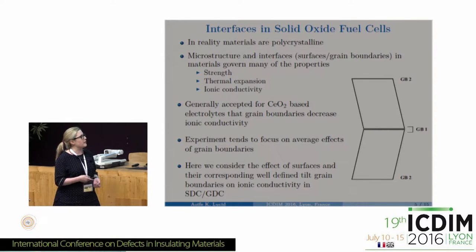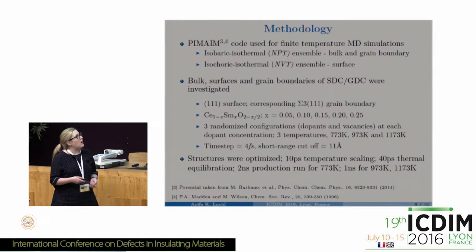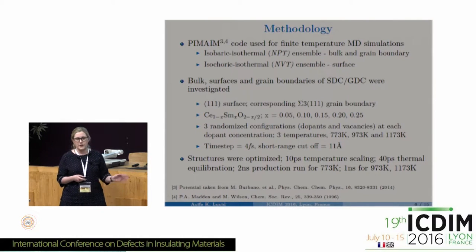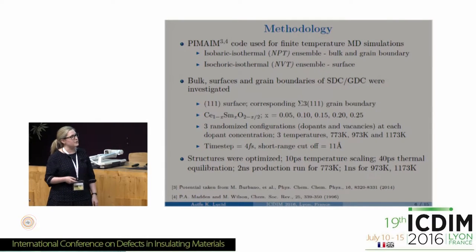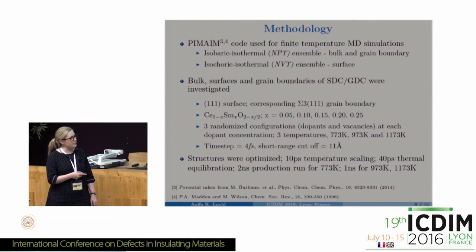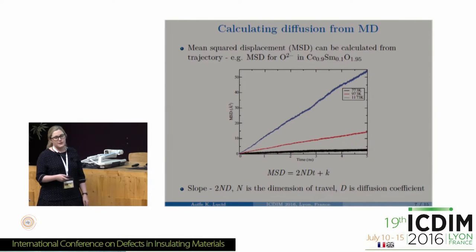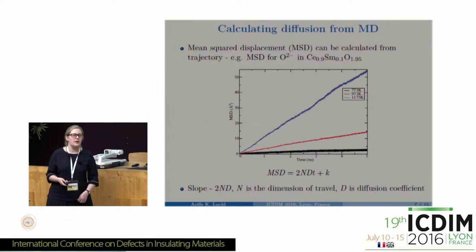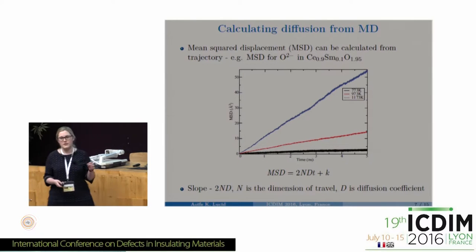Today results are presented for one surface and one grain boundary in gadolinium and samarium doped ceria. Methodology uses the PIM-AIM code with five different concentrations of samarium doping. Temperatures span the intermediate temperature range from 773 K to 1173 K, going slightly outside for better statistical sampling. Two nanosecond production runs are used for low temperatures and one nanosecond runs for high temperatures to investigate conductivities.